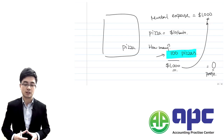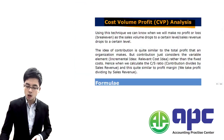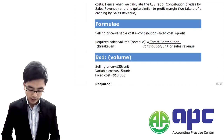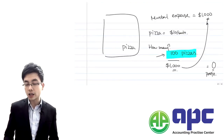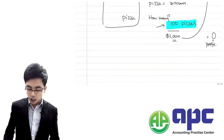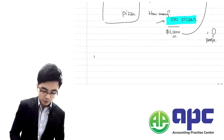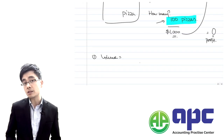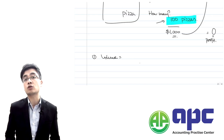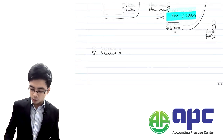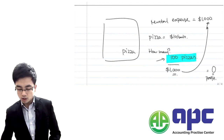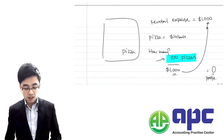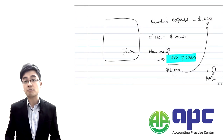That's what I mean by CVP. Of course, there will be formulae. In this scenario, our aim is to calculate the break-even volume — how many pieces we have to sell to reach break-even. We take $1,000 of fixed costs and divide by $10 per unit contribution, which gives us 100 units.